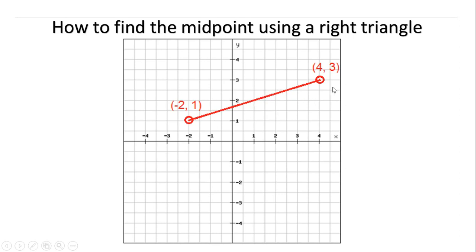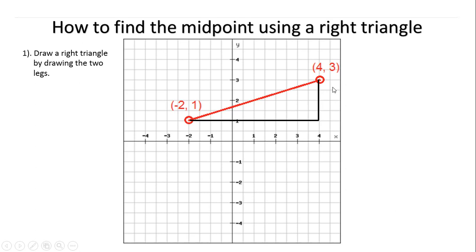You could use the midpoint formula, but I find that sometimes it's easier to do it by using the right triangle. So the first thing you want to do is draw the right triangle by drawing the two legs. So the two legs would be right there. I'm just drawing it below. So these are leg 1 and leg 2.